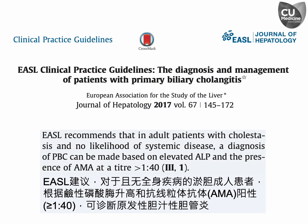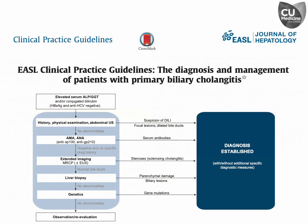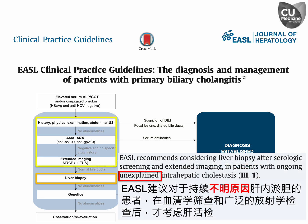The European Association for the Study of the Liver recommends that PBC can be diagnosed in adult patients with cholestasis if they have elevated alkaline phosphatase and the presence of AMA, provided there is no indication of systemic disease. In contrast to autoimmune hepatitis, both professional organizations advise against using liver biopsy as a routine diagnostic tool for most patients with suspected PBC. Liver biopsy should be considered only for patients who have unexplained intrahepatic cholestasis after undergoing serological screening and comprehensive imaging examinations.